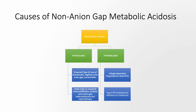In all types of renal tubular acidosis except proximal RTA, the urine anion gap is positive because there are problems with distal acidification, meaning problems with ammonium excretion. Distal or type 1 RTA has a positive urine anion gap, nephrocalcinosis, nephrolithiasis, and low urine citrate. The other possibility is hyperkalemic RTA, which has two subtypes: voltage-dependent hyperkalemic distal RTA, or type 4 RTA due to aldosterone deficiency or resistance. In both of these types, there is a positive urine anion gap due to problems with ammonium excretion.